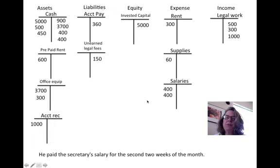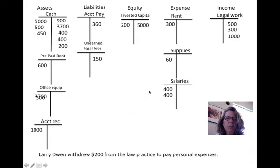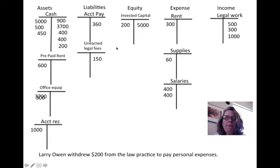He paid a secretary salary for the second period: another $400 cash decrease and $400 increase in salaries expense. Next, he withdrew $200 from his law practice for personal needs like rent or groceries, writing a check from Larry Owen's law practice to himself. That's a decrease of $200 in cash, and he now has $4,800 in equity. It's not an expense because it's not part of doing business with the firm.